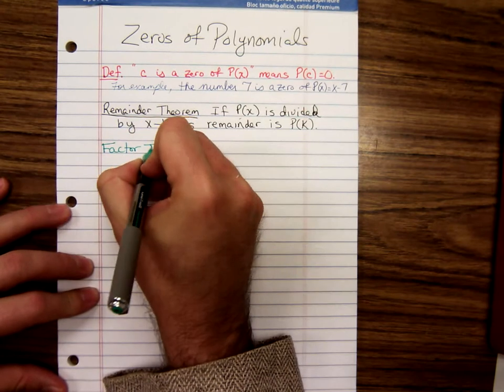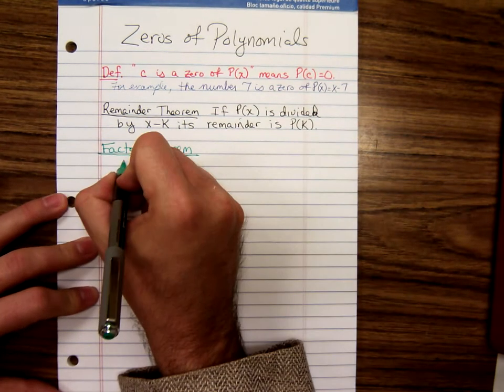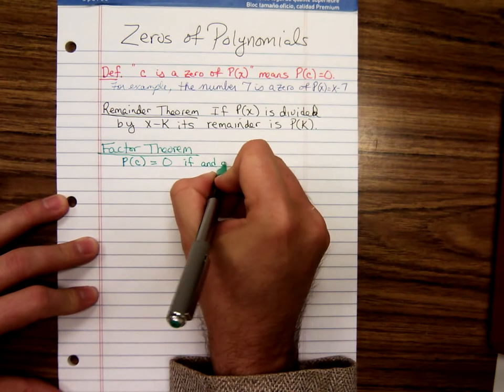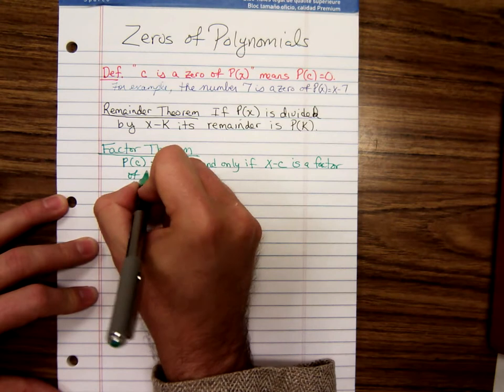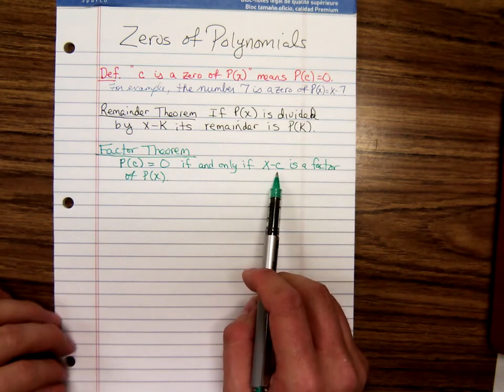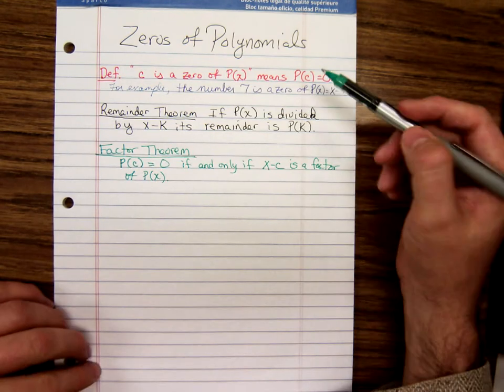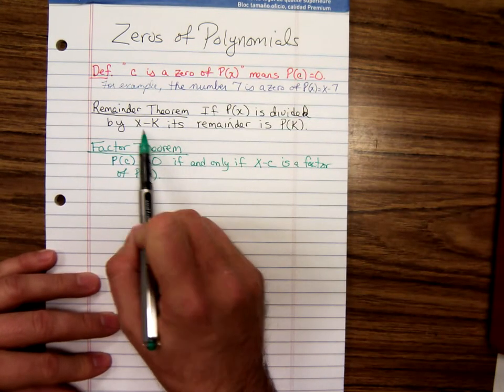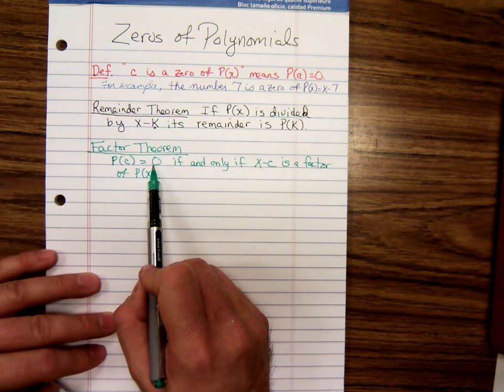The factor theorem, again, I want to go ahead and get all of this stated. The factor theorem says that P of C equals zero if and only if X minus C is a factor of P of X, the polynomial. And that if and only if works both ways. If P of C is zero, then X minus C is a factor. Also, if X minus C is a factor, then P of C is zero. So we know if we plug C in, we'll get zero. We also know that X minus C would have a remainder. When you divide by X minus C, you're getting P of C. So if C is a zero, then X minus C is a factor.